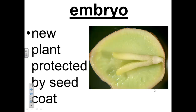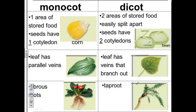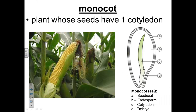The seeds of some plants have one cotyledon — these plants are called monocots. Plants that have seeds with two cotyledons are called dicots. Here is a chart of monocots and dicots. You will be labeling the parts in your notes.